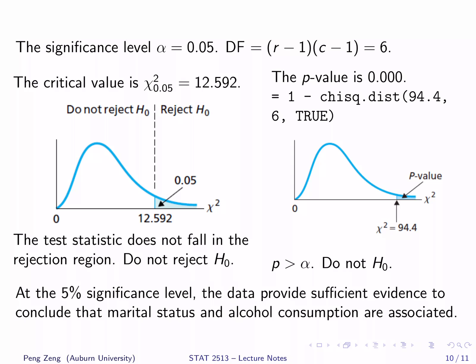When using the p-value approach, the p-value is 0. We can calculate it using Excel: it is 1 minus CHISQ.DIST(94.4, 6, TRUE). The p-value is less than the significance level alpha, so we reject H-null. Both approaches lead to the rejection of H-null. At the 5% significance level, the data provide sufficient evidence to conclude that marital status and alcohol consumption are associated.